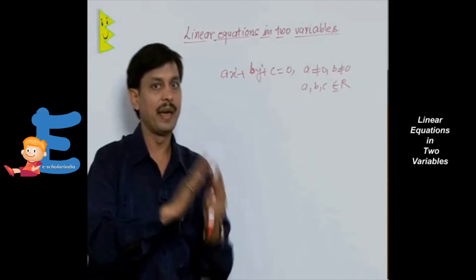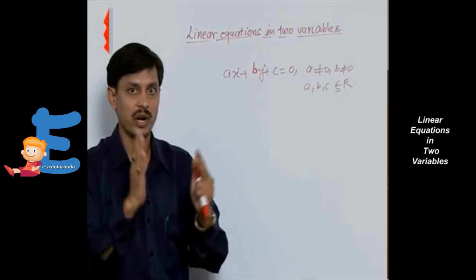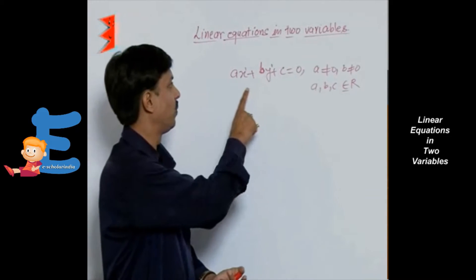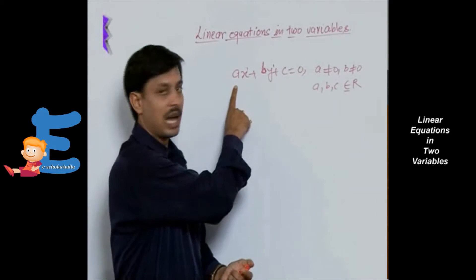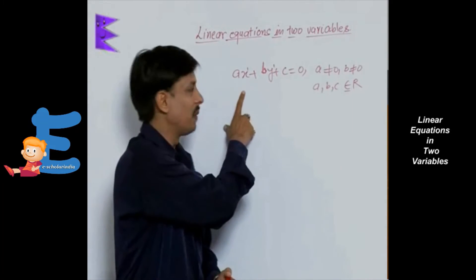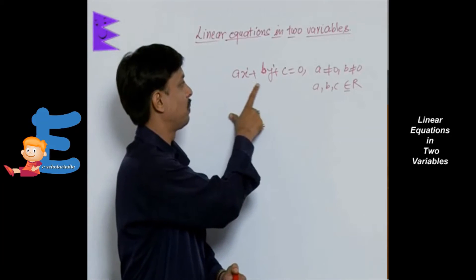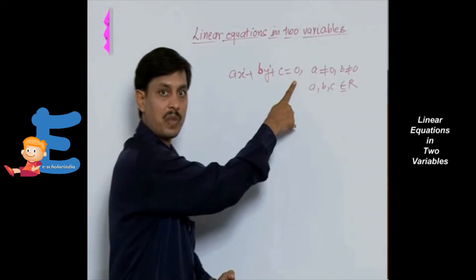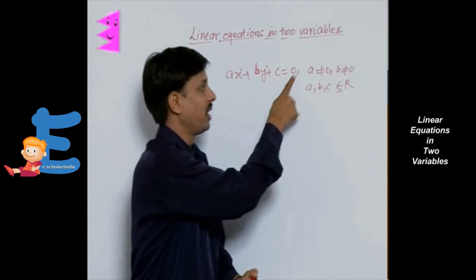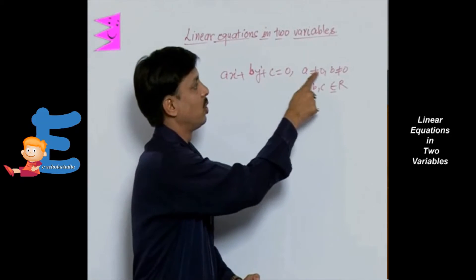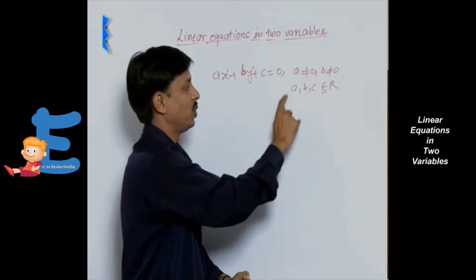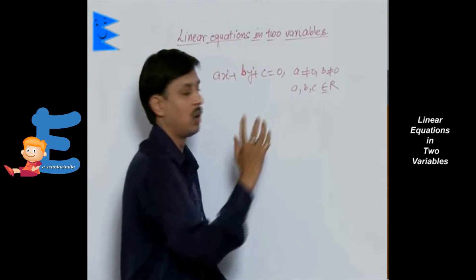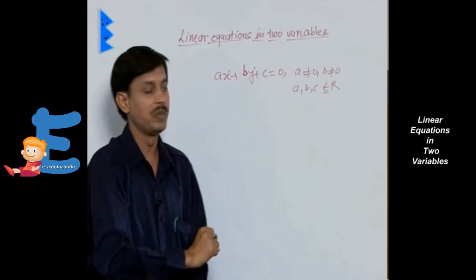I have explained what is the standard form of the linear equation in two variables. An equation in the form of AX plus BY plus C equals 0, with the mandatory condition that A is not equal to 0, B is not equal to 0, and A, B, C belong to R.